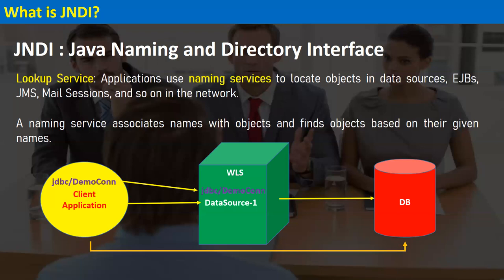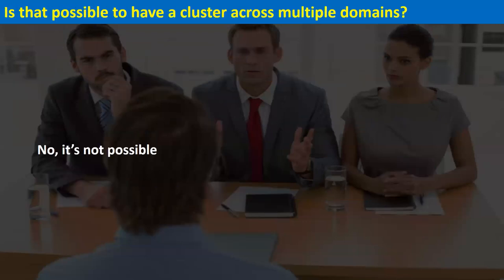The same concept applies to all resources. For example, if we have configured JMS and an application needs to receive messages from a queue, each queue is assigned a JNDI name. That same JNDI name is defined in the application, and the application will look up the queue or topic JNDI name to connect to the JMS services. This is JNDI — a lookup and naming service used to name resources created in our WebLogic server.